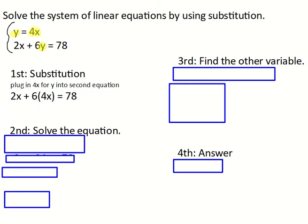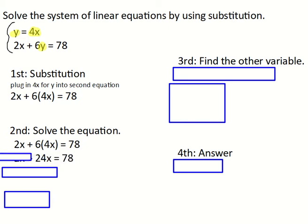So my second step, I'm going to solve that equation now. So I'm going to solve 2x plus 6, parentheses 4x equals 78. So what I'm going to do is get rid of those parentheses. I'm going to multiply 6 times 4. 6 times 4 is 24. So I'm going to have 24x there in that middle.